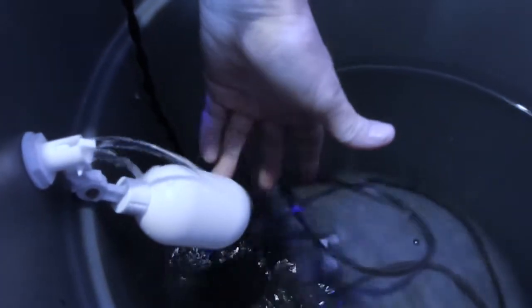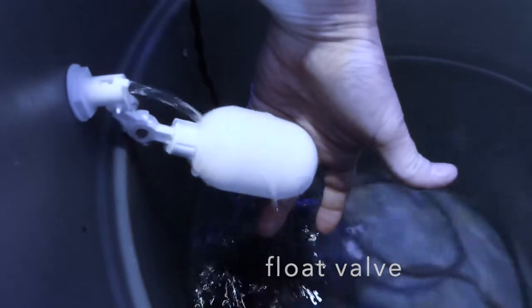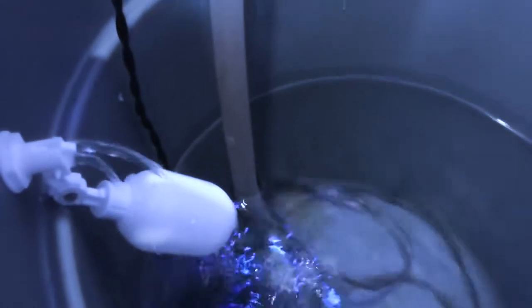When the water level gets up to where the ball valve is and lifts it up, it's going to turn it off. This prevents those floods that you can have when you're making water and you forget about it.